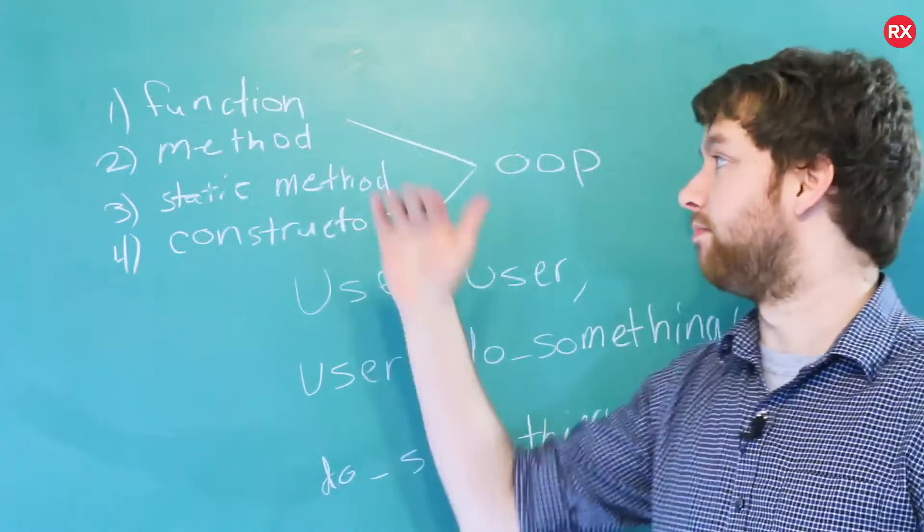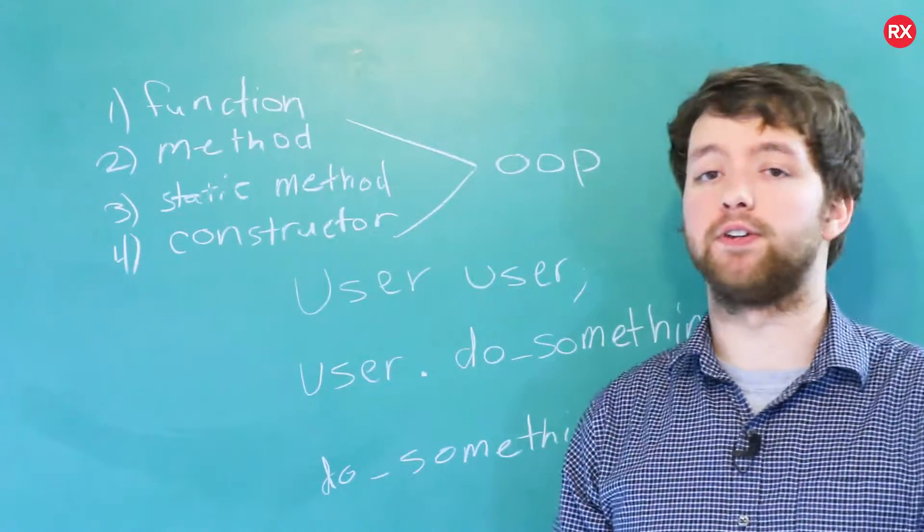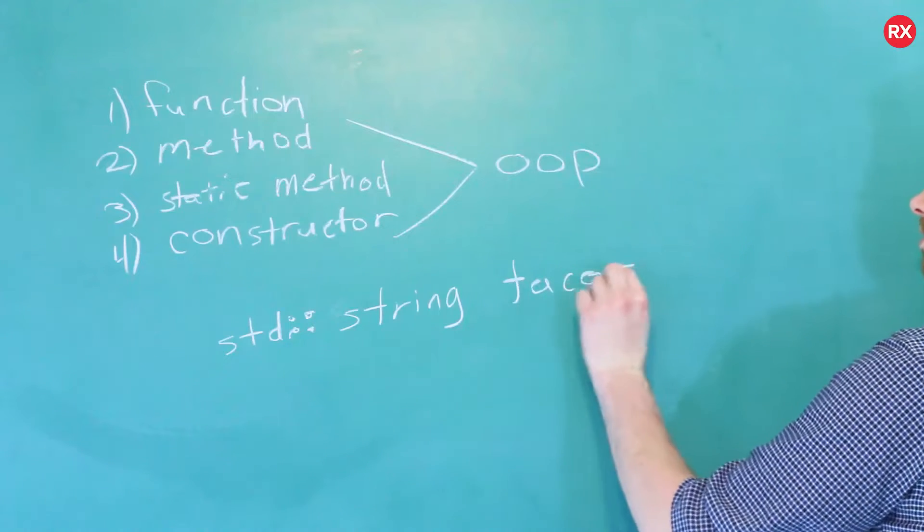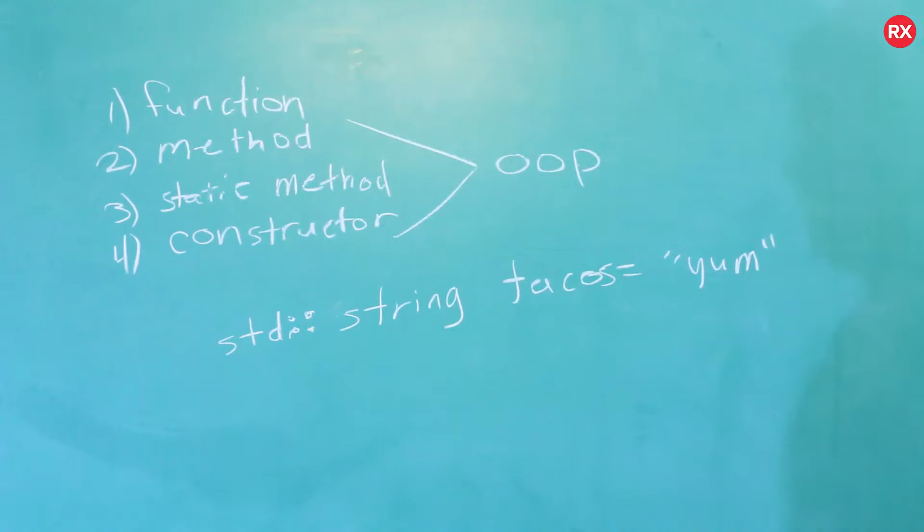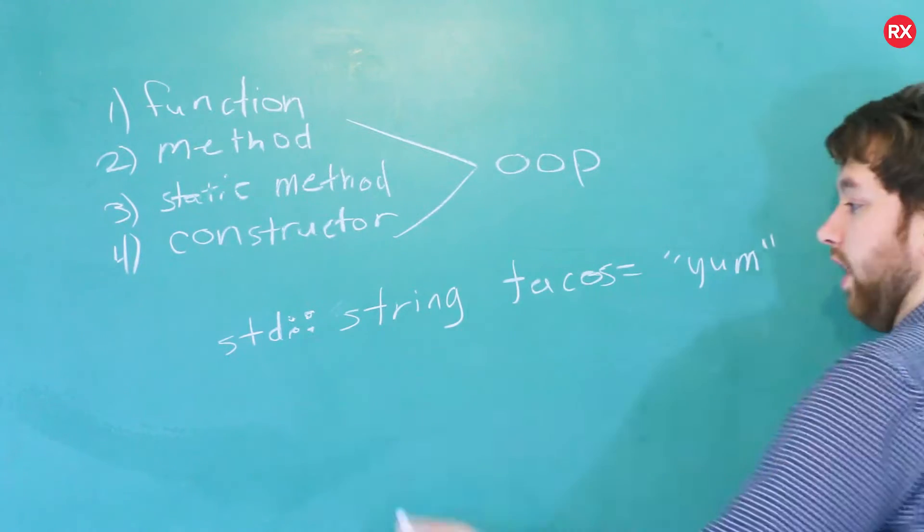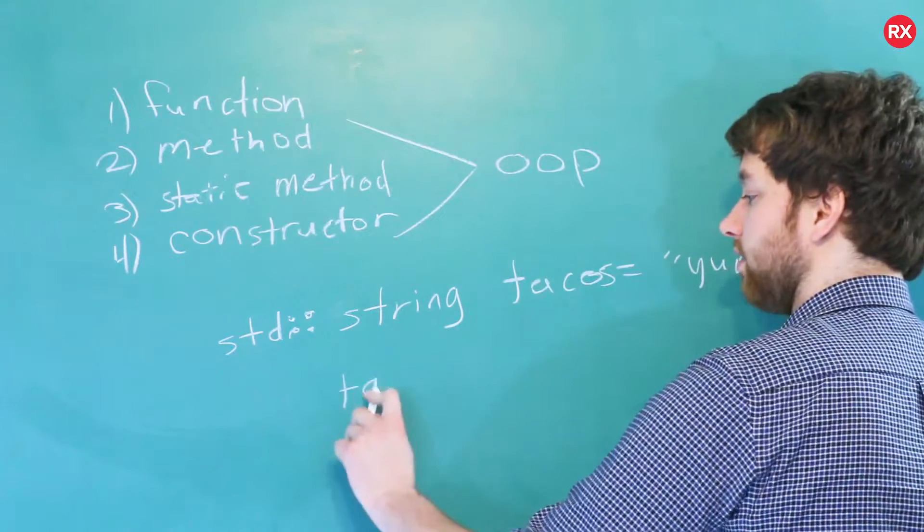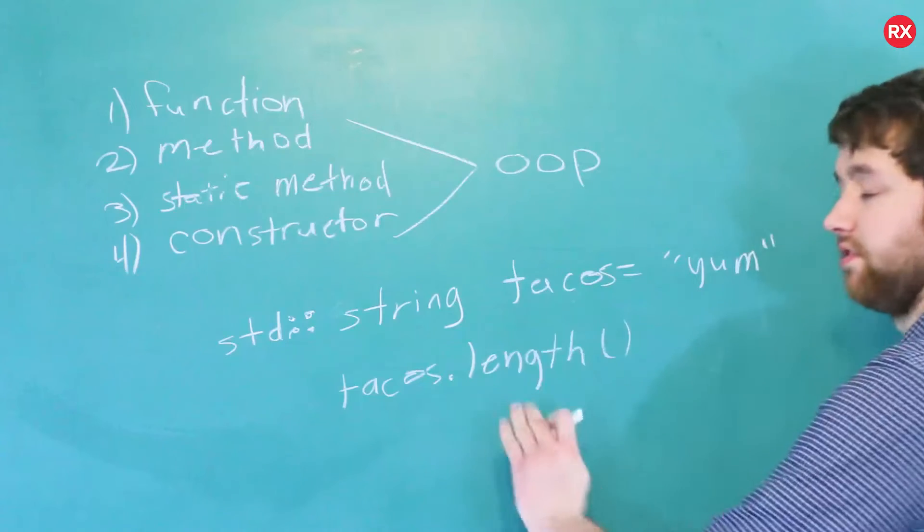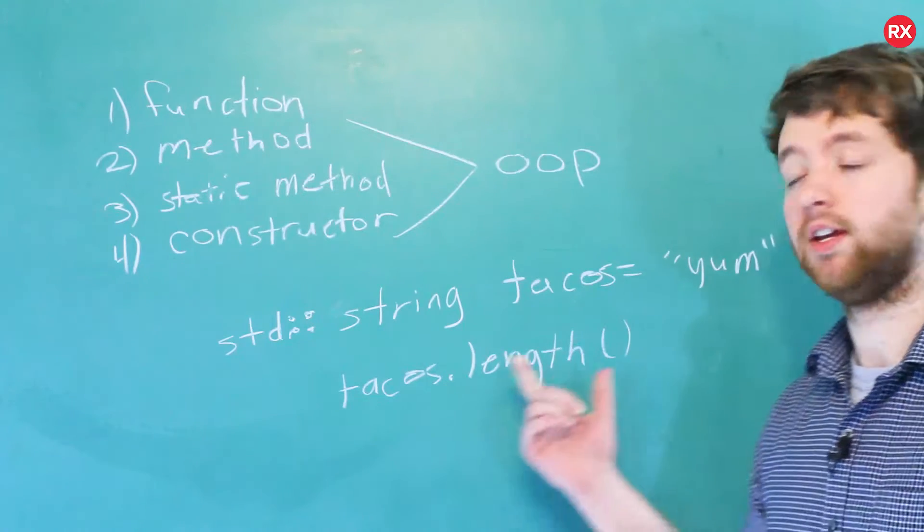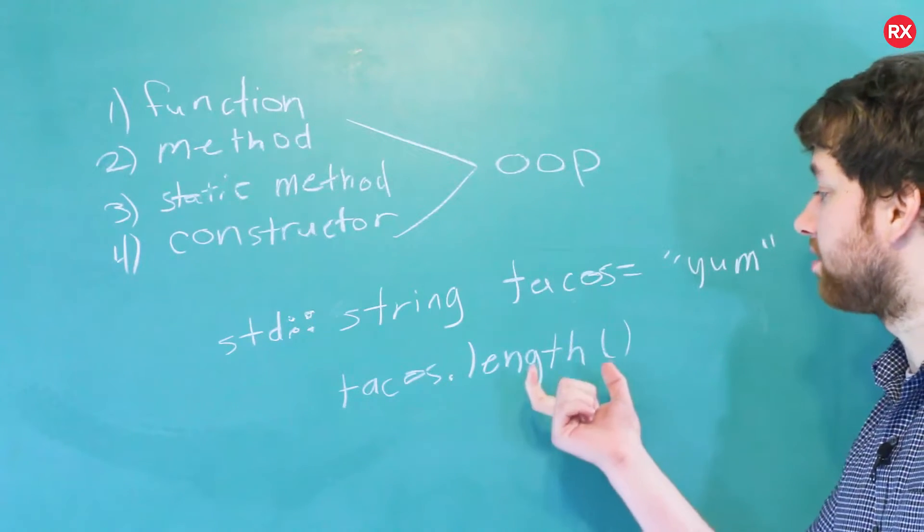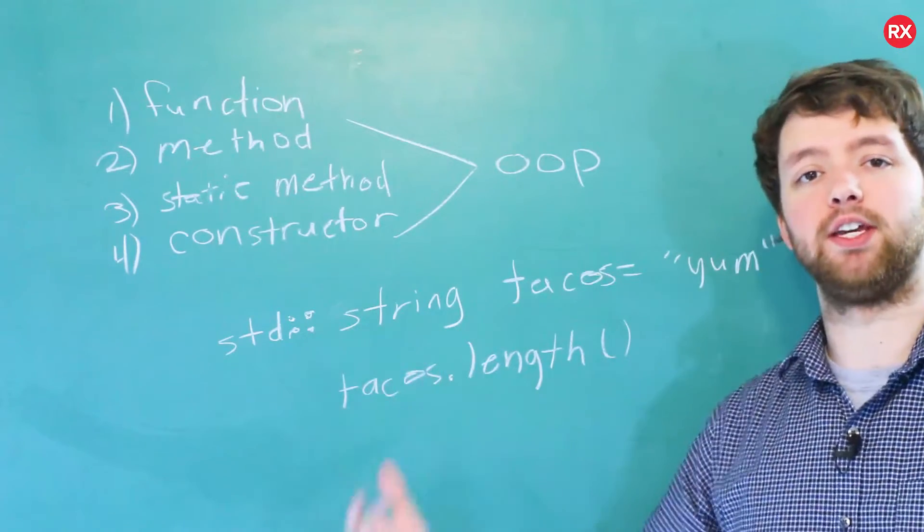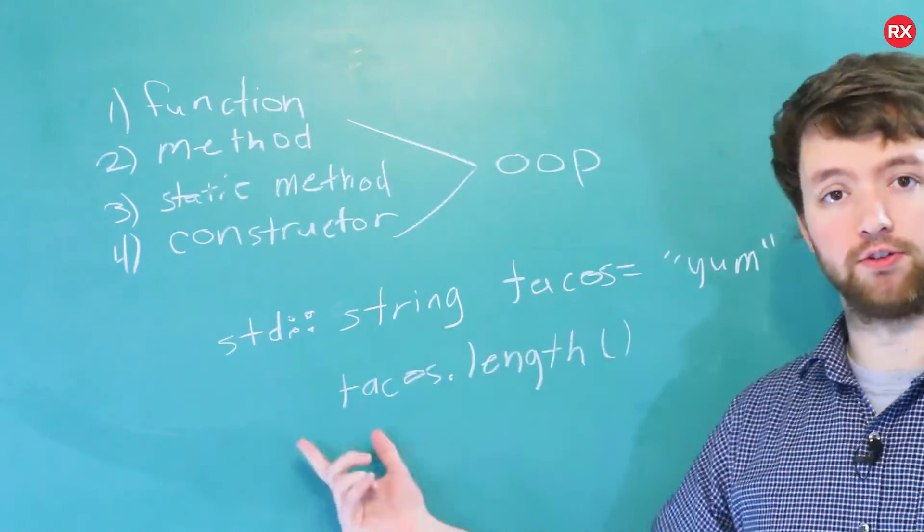Now before we jump into number three and four, I wanted to give you another example of a method. We used methods when we were talking about strings. So when you create a string, you're creating an object of type string. And string has a method, so we could say tacos dot length. It's just a function, but it's attached to an object. And what it does is it does some functionality, but somehow it's related to this object. Specifically, it gets the length, how many characters is in tacos.